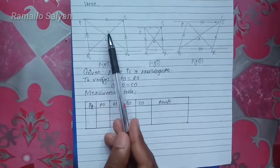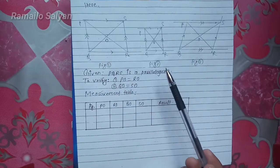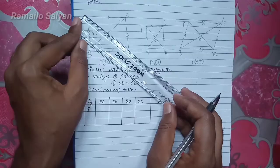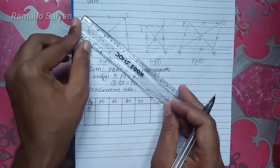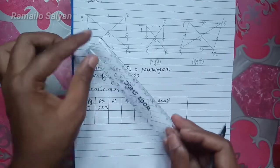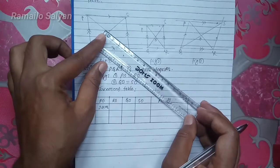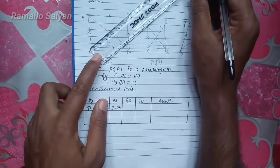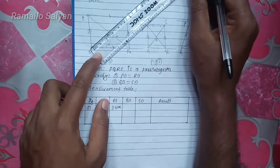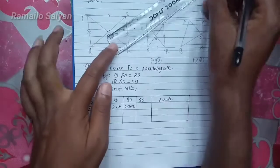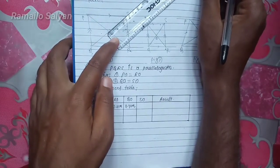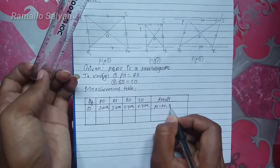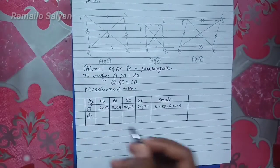Now measure the lengths of PO, RO, QO, and SO from each parallelogram using the scale. From the first figure: length of PO is 3.2 cm, length of RO is also 3.2 cm, length of QO is 2.7 cm, SO is also 2.7 cm. Result: PO equals RO and QO equals SO. From the second figure: length of PO is 1.8 cm.